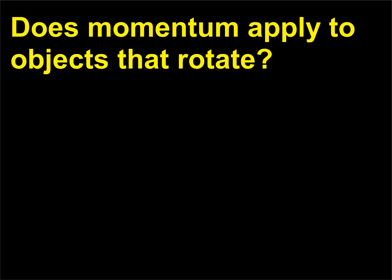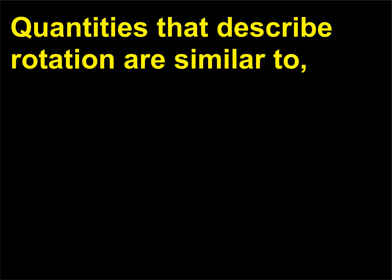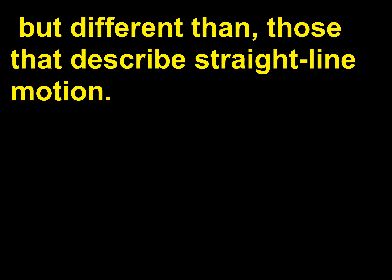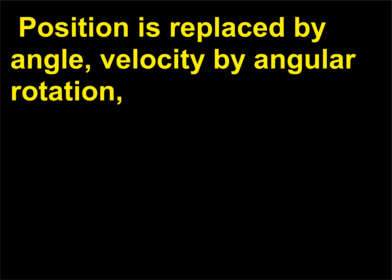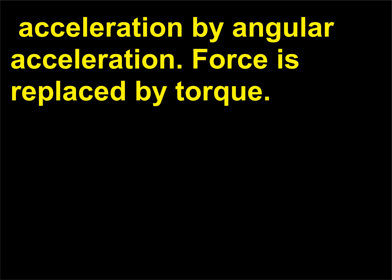Does momentum apply to objects that rotate? The momentum of a rotation is constant. Quantities that describe rotation are similar to, but different than, those that describe straight-line motion. Position is replaced by angle, velocity by angular rotation, acceleration by angular acceleration, and force is replaced by torque.